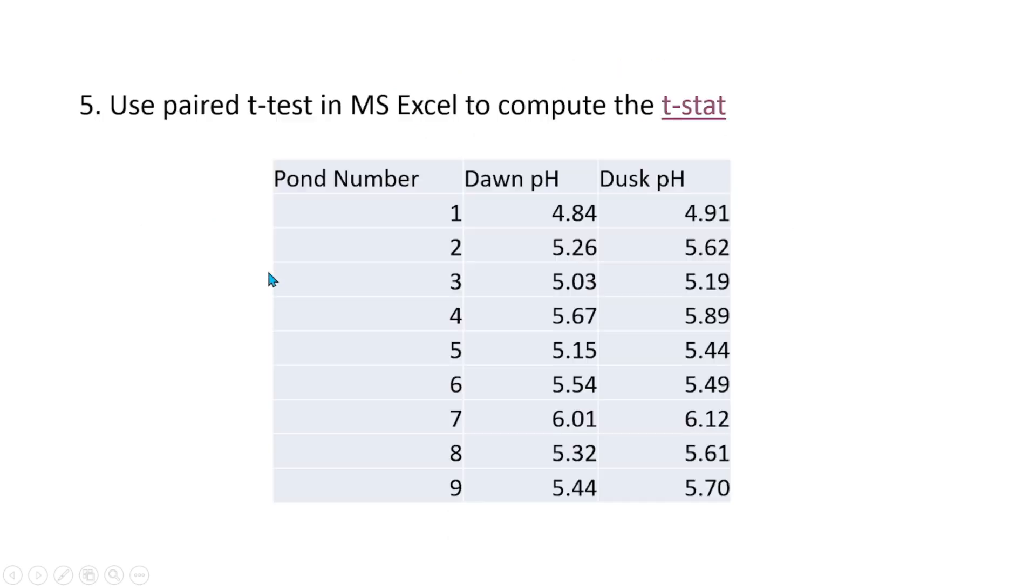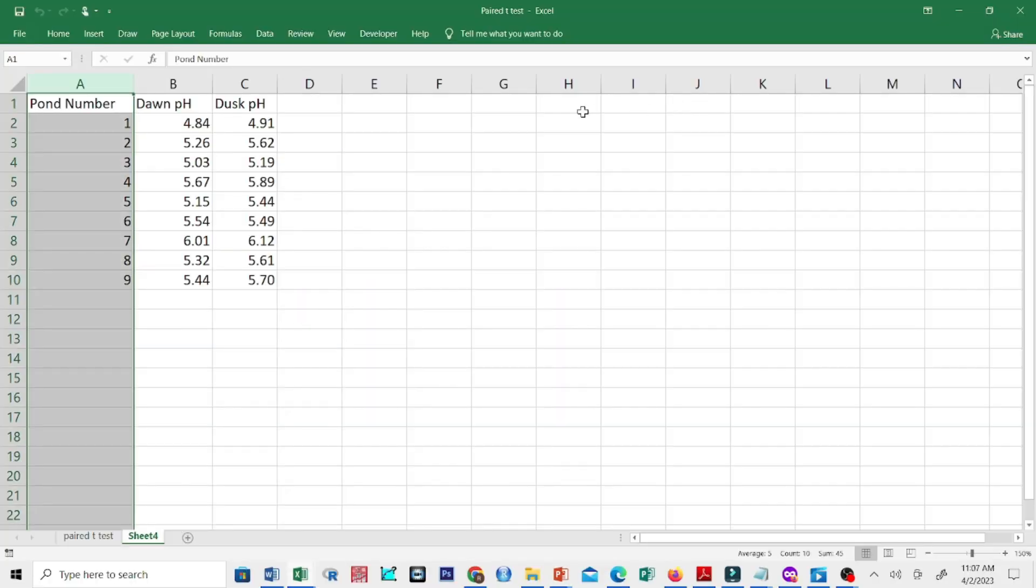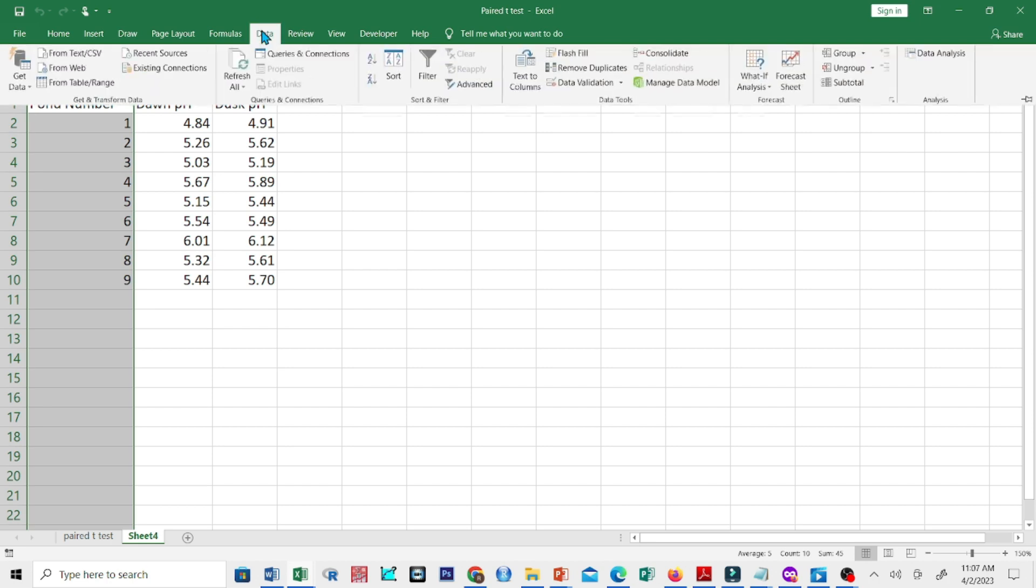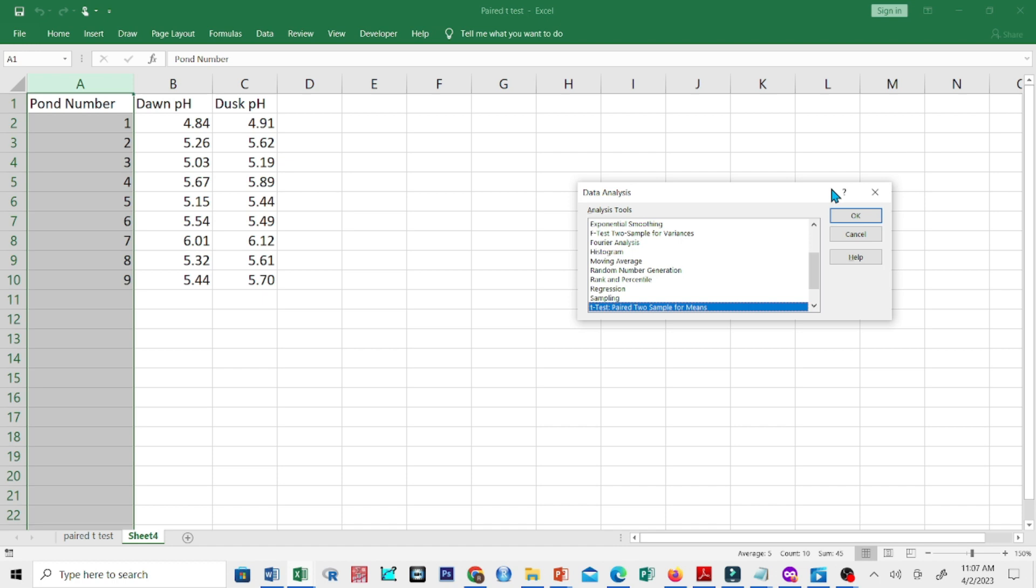Step 5. Let us carry out the computation using the Microsoft Excel built-in statistical functions. This is our data on the pH level in 9 ponds at dawn and dusk. We shall click data, then select data analysis, and choose t-test, paired two samples for means.